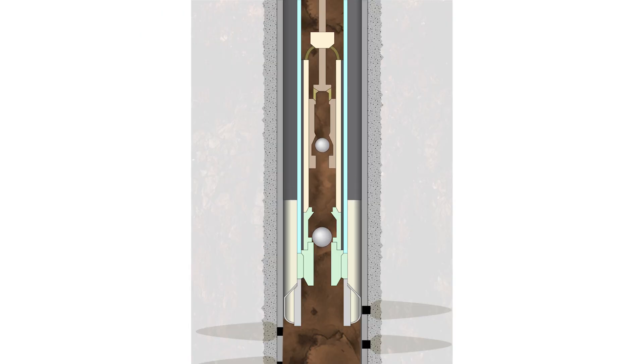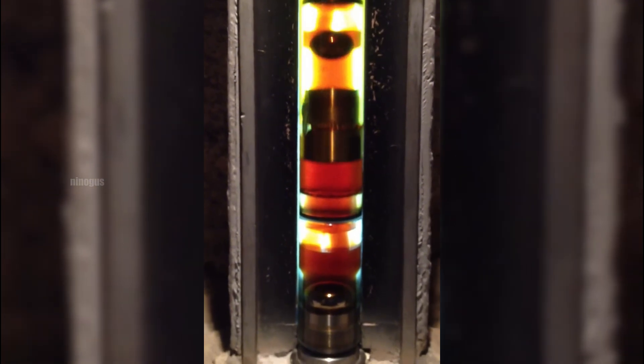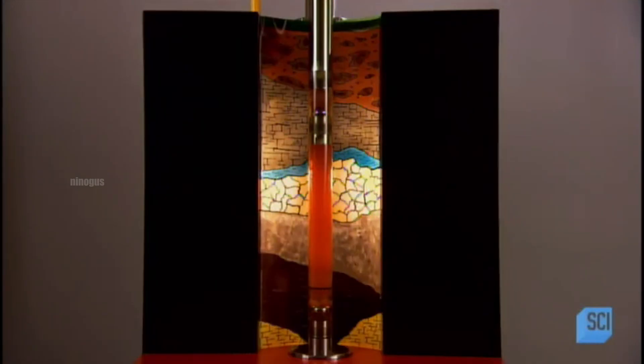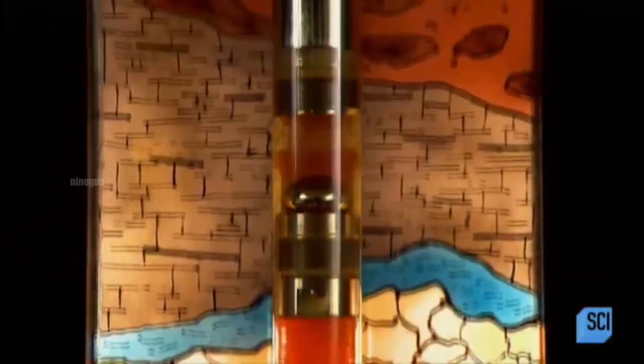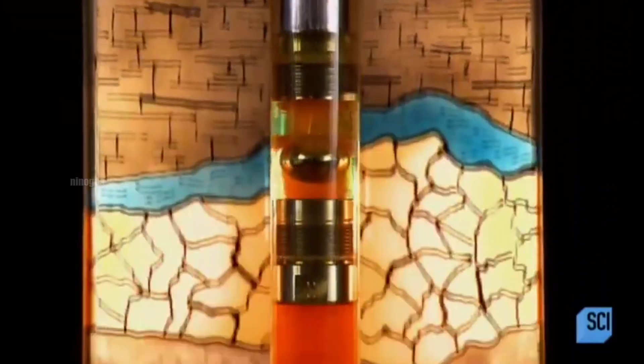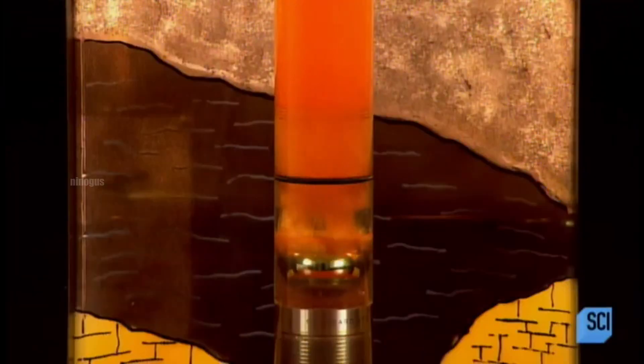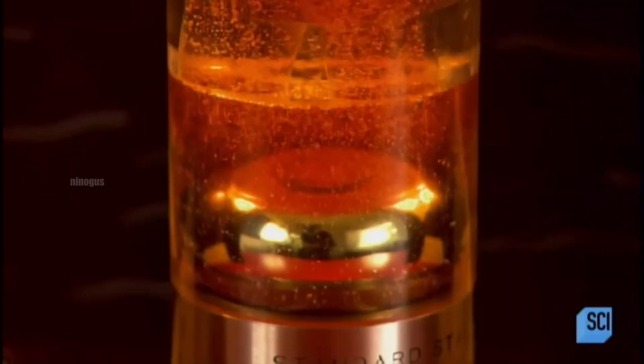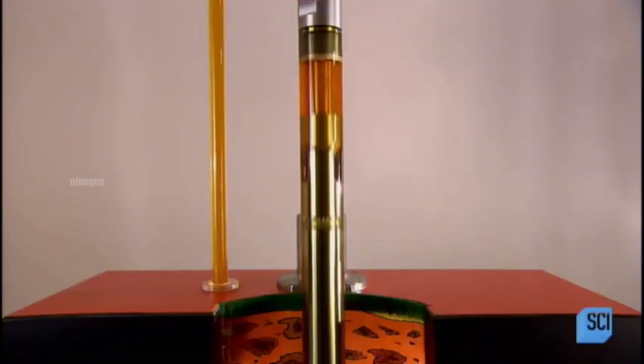Conversely, when the sucker rod is pushed downward, the suction valve closes while the discharge valve opens. The pressure created by this movement forces the fluid inside the pump barrel upward through the production tubing that connects directly to the surface. This process happens continuously, creating a steady flow of oil.